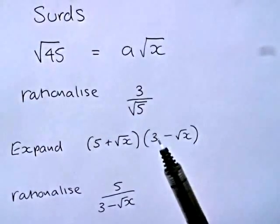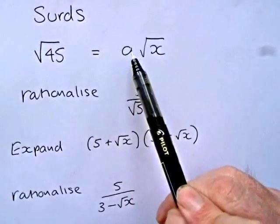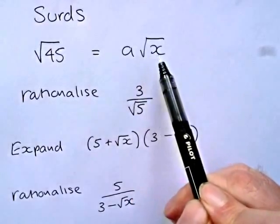So here's some quick reminders on how to deal with surds. We'll start off by writing root 45 in the form a times root x.